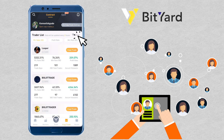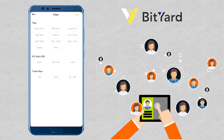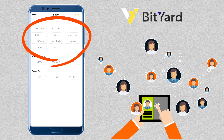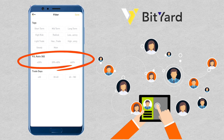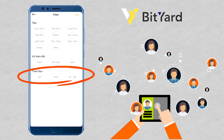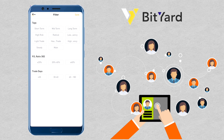You can also filter the traders based on your specific target. Choose if it's short term, mid term, long term, and so on. Select profit or loss ratio and the trading days. And tap on save.